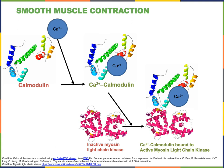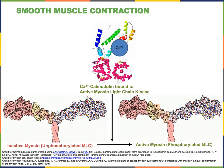In smooth muscle fibers, there is a different calcium sensor protein known as calmodulin. When calcium binds to calmodulin, the calcium-calmodulin complex becomes activated and then binds to and activates an enzyme known as myosin light chain kinase. Myosin light chain kinase is activated by calcium-calmodulin, and then phosphorylates myosin light chain in order to activate myosin.